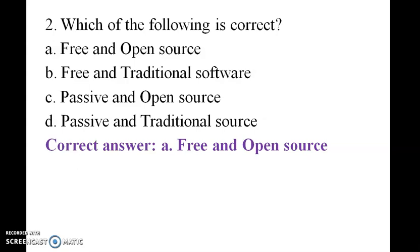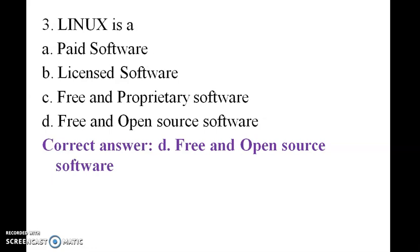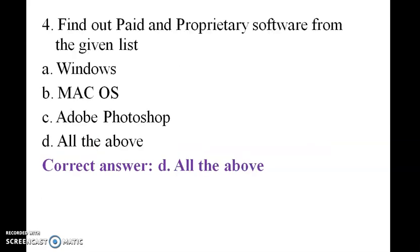Linux is: paid software, licensed software, free and proprietary software, free and open source software. It's free and open source software. Find out paid and proprietary software from the given list.